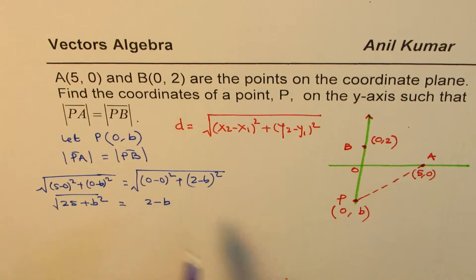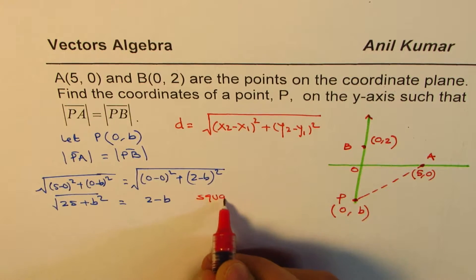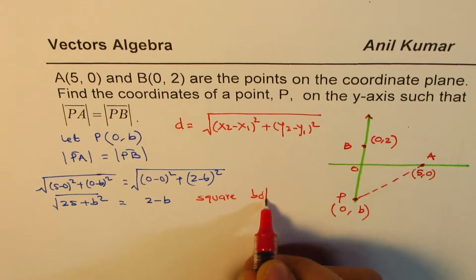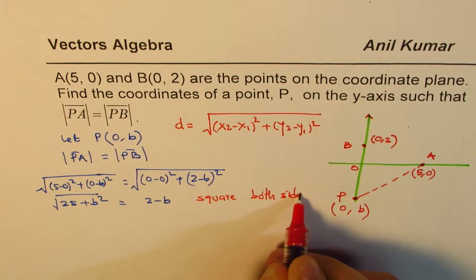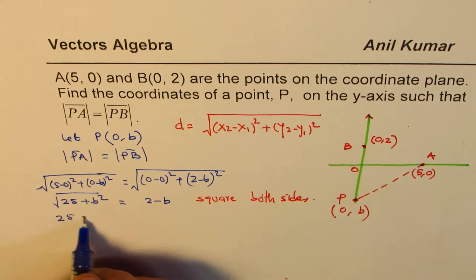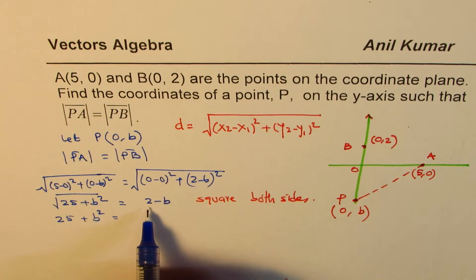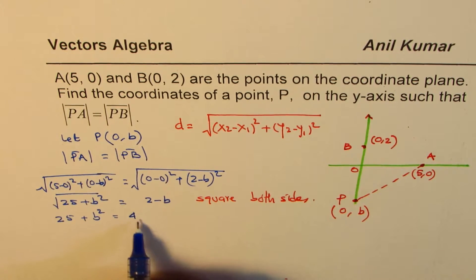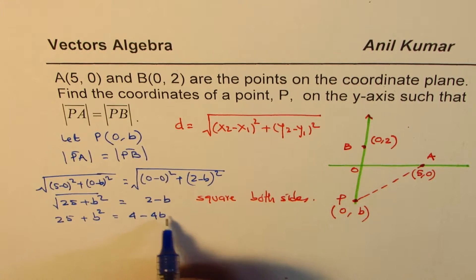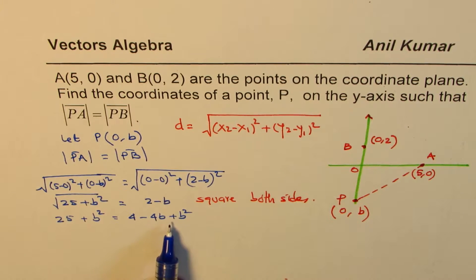Now to solve, we can square both sides. So let us square both sides. What do we get? We get 25 + b² on the left side. Squaring 2 minus b will give me 4 - 4b + b².